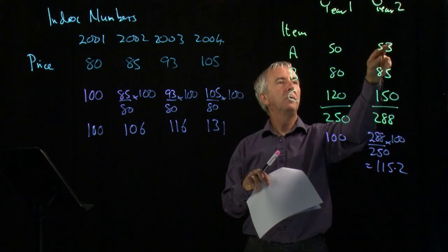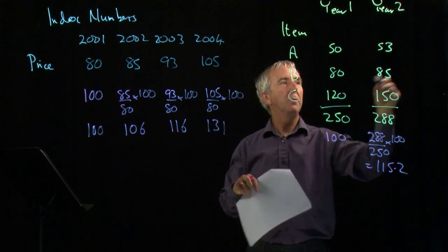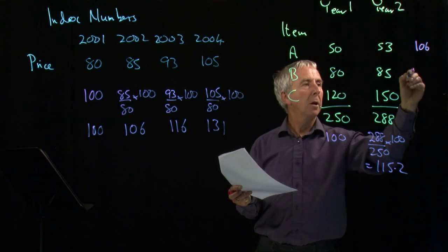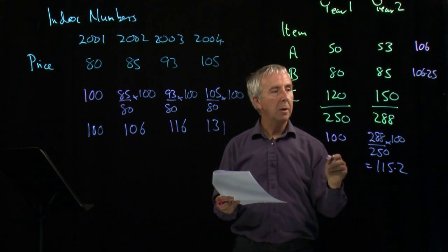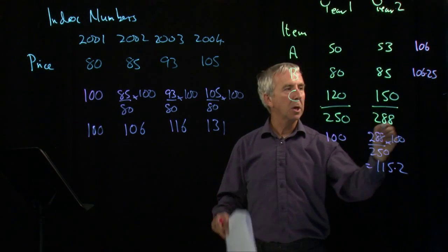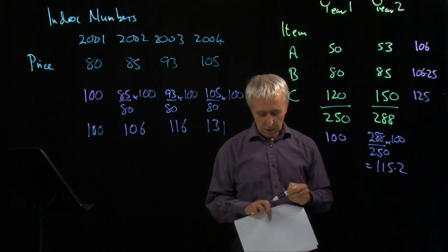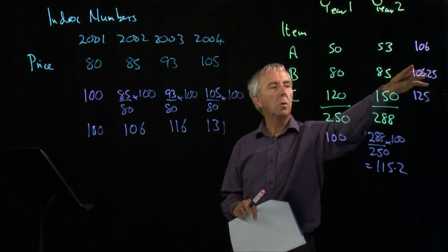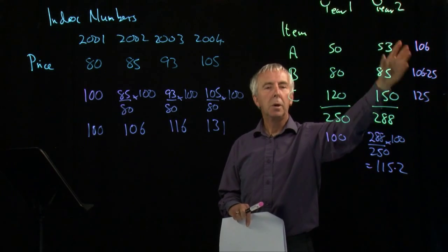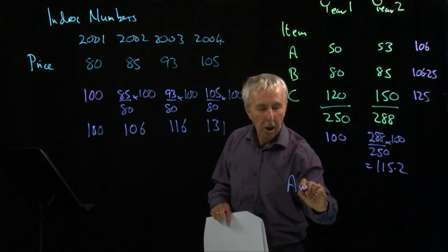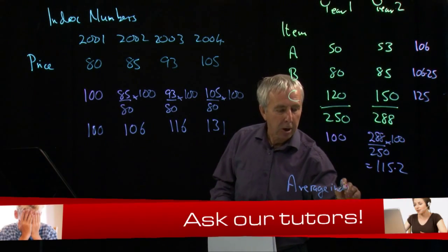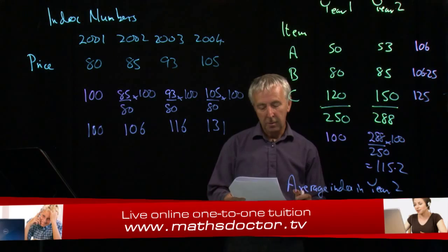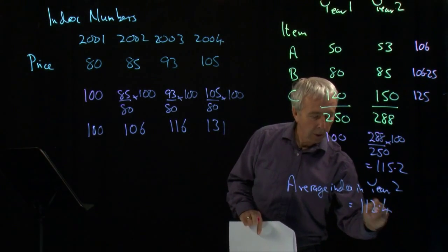If we do that: 53 divided by 50 times 100 is 106; 85 divided by 80 is 106.25; and 150 divided by 120 is 125. So the items have separate price indices — 106, 106.25, and 125 — and we could then average those.